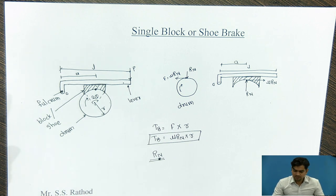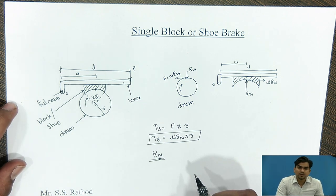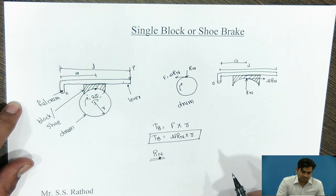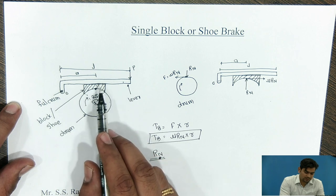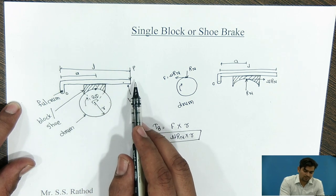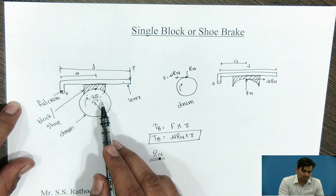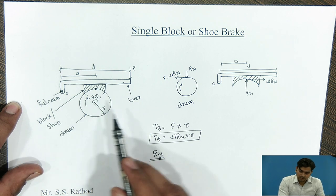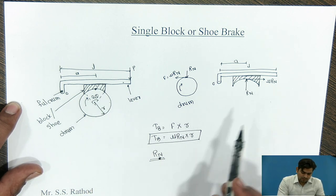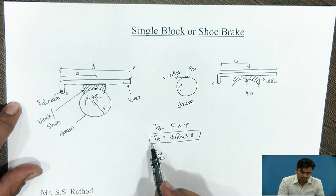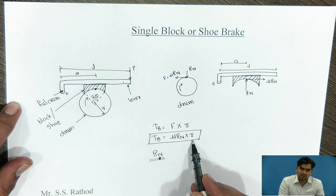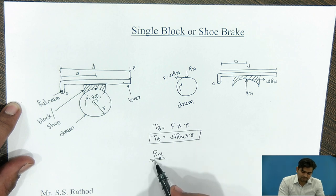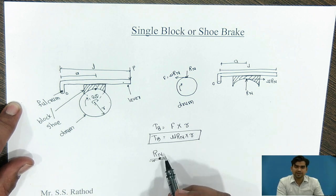This diagram we have already seen in the last session — the drum rotates in the clockwise direction. This is the lever on which the block is rigidly mounted, and if you apply the force, the drum will get stopped. From the free body diagram, the braking torque Tb is equal to μRn into the radius of the drum R. So we have to calculate the value of Rn to get the braking torque.